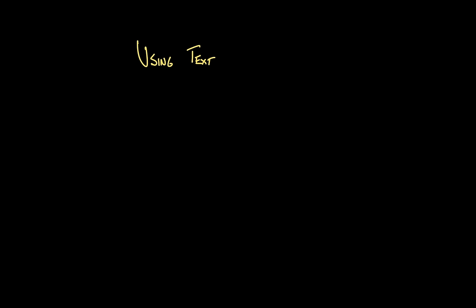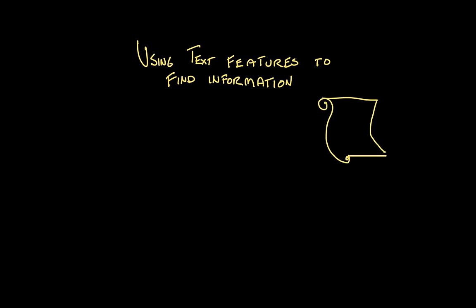Hello, readers. Today we're going to talk about how to use text features to find information in a piece of nonfiction writing, like a textbook, an encyclopedia entry, or a news article. Information in these texts is organized with a specific purpose in mind. The author wants you to be able to read the text features like a map, so you can find the information that you need.